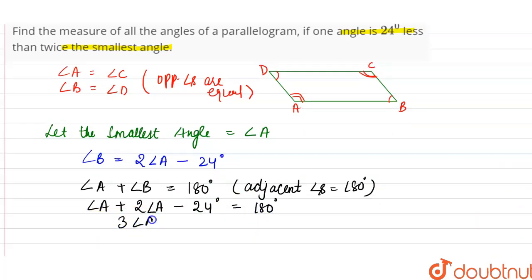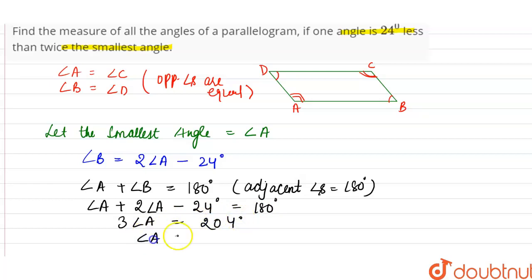So, thrice of angle A is equal to 180 plus 24, which equals 204 degrees. Therefore, angle A is equal to 204 divided by 3, and 3 into 68 is 204, so angle A is 68 degrees.